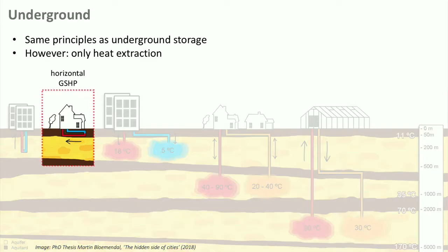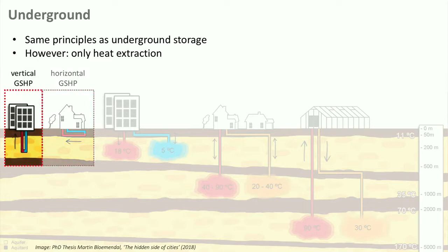Ground source heat pump systems use the top layers of soil and there are two types. Horizontal ground source heat pumps use a network of pipes close to the surface — 1 to 2 meters — and although they are relatively easy to build, they are more subject to seasonal changes. Vertical ground source heat pumps use one or more drilled shafts that go much deeper, up to 100 meters. This means a small surface footprint can deliver much more energy than a horizontal system, but drilling instead of digging is more expensive.